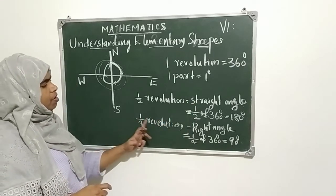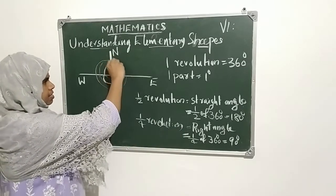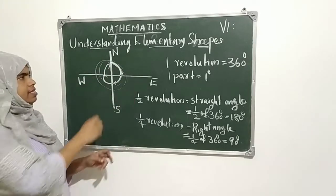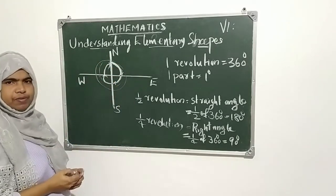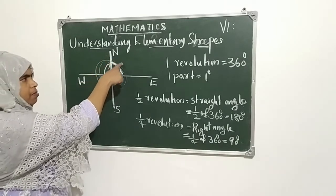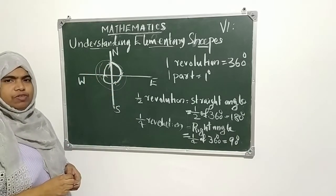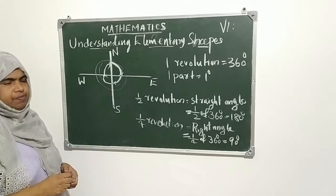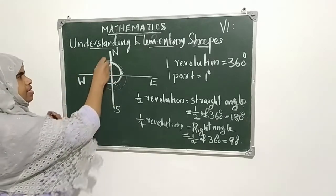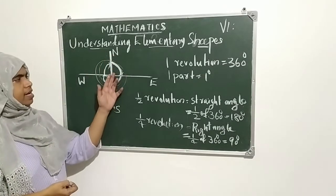Then, one-quarter revolution equals one-quarter of 360 degrees. From north to east, this is one-quarter revolution — which angle? Right angle. One-quarter of 360 degrees is a right angle, that is 90 degrees.